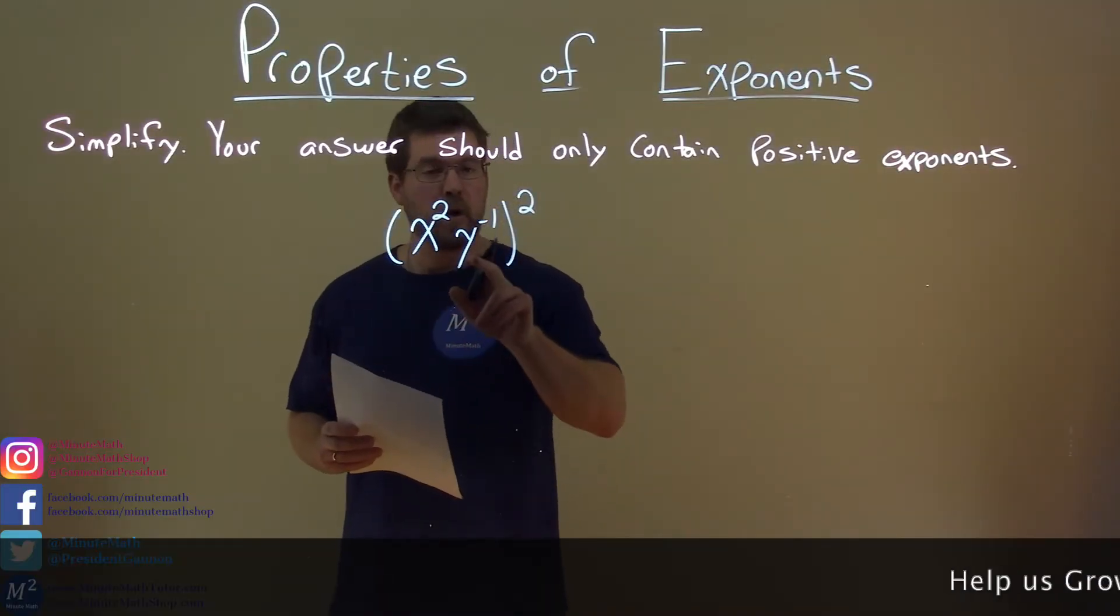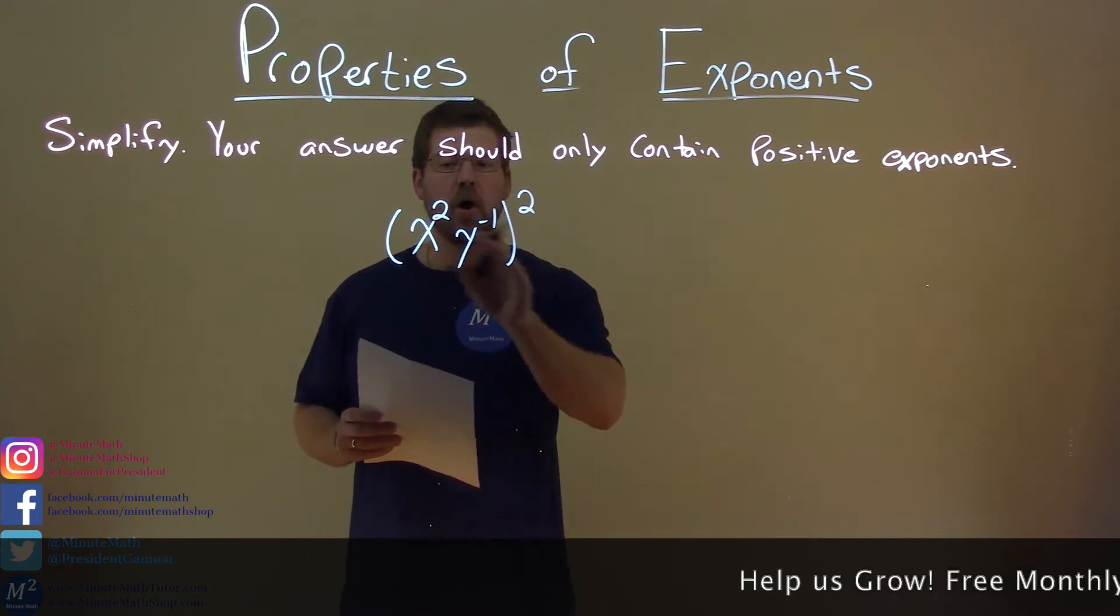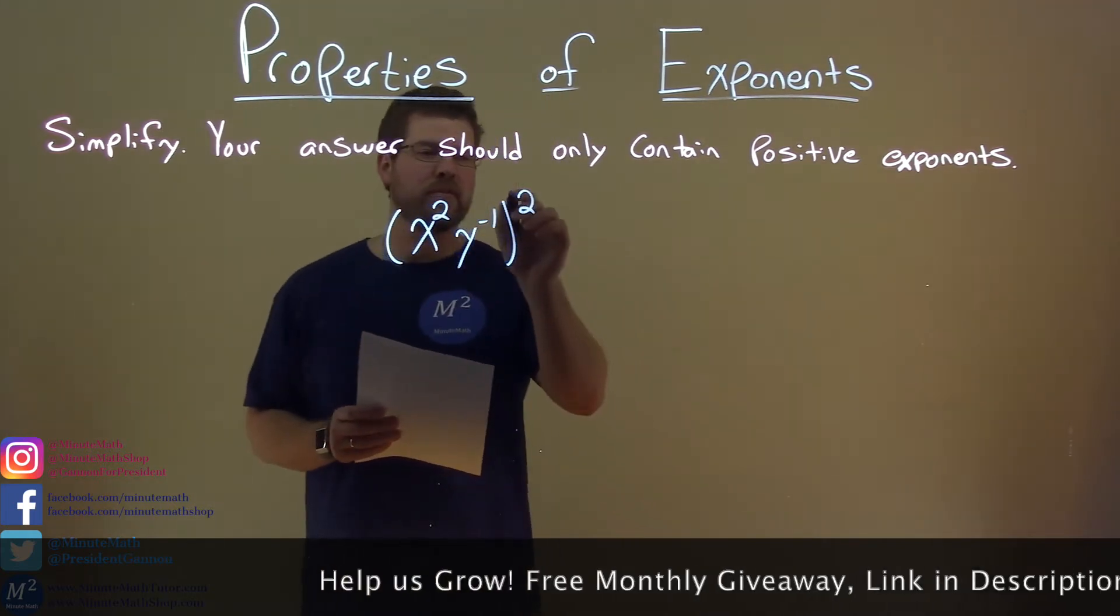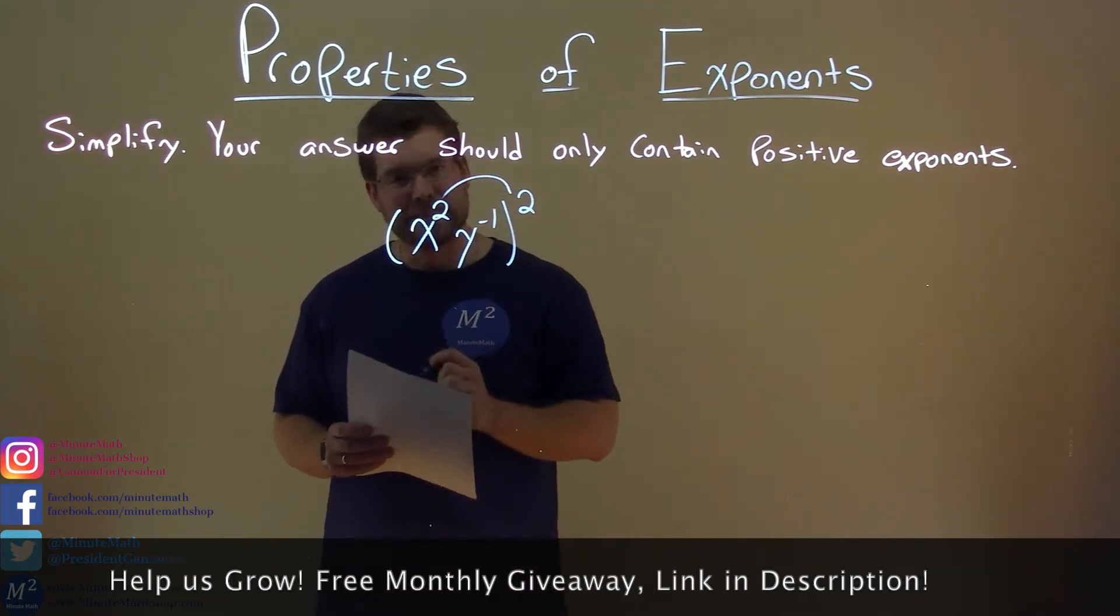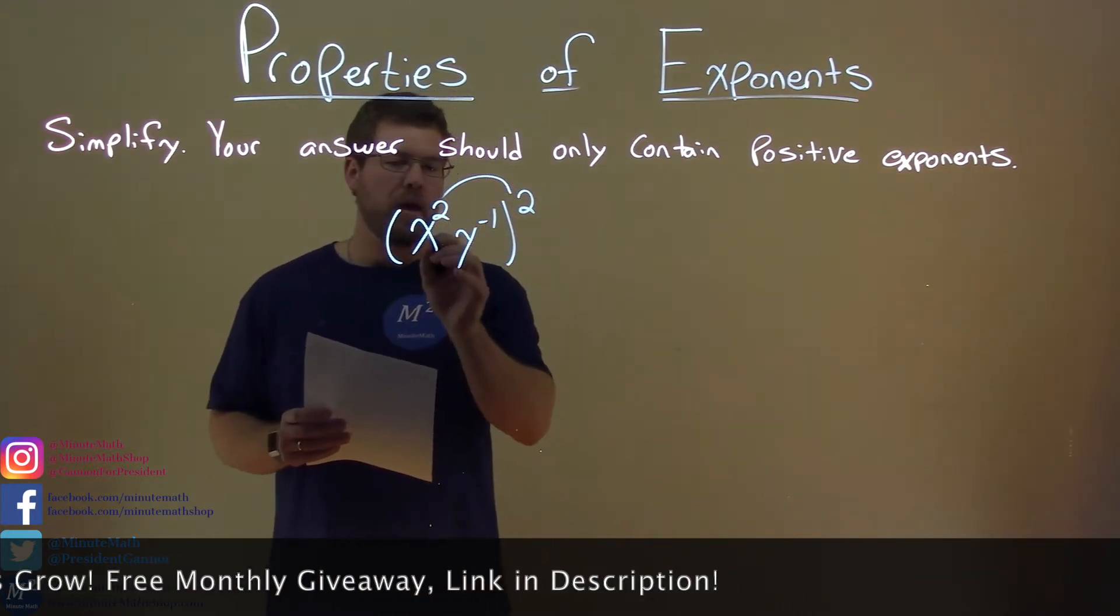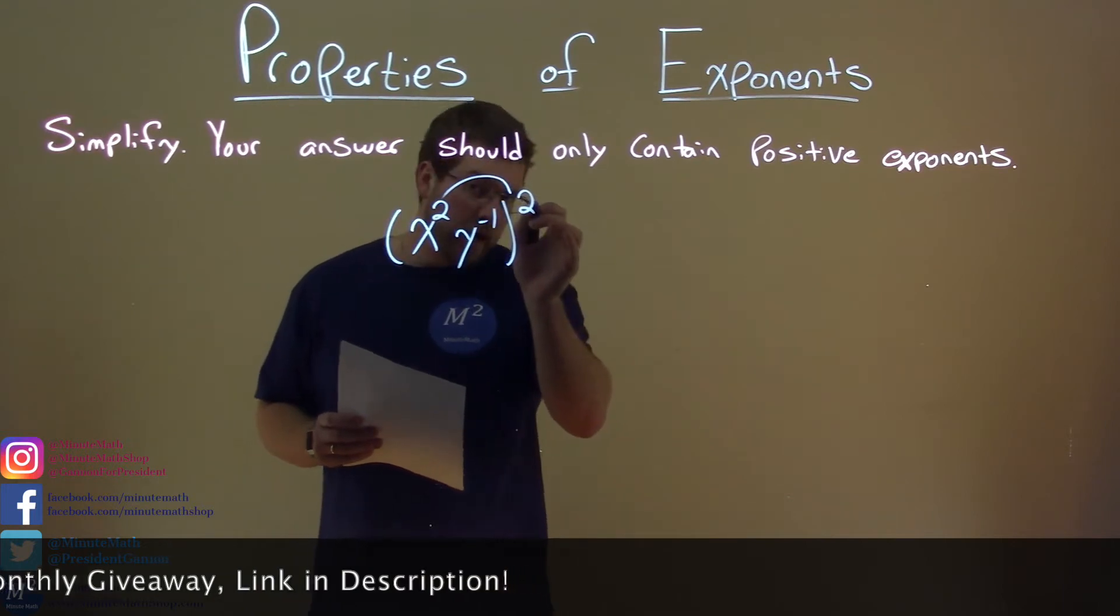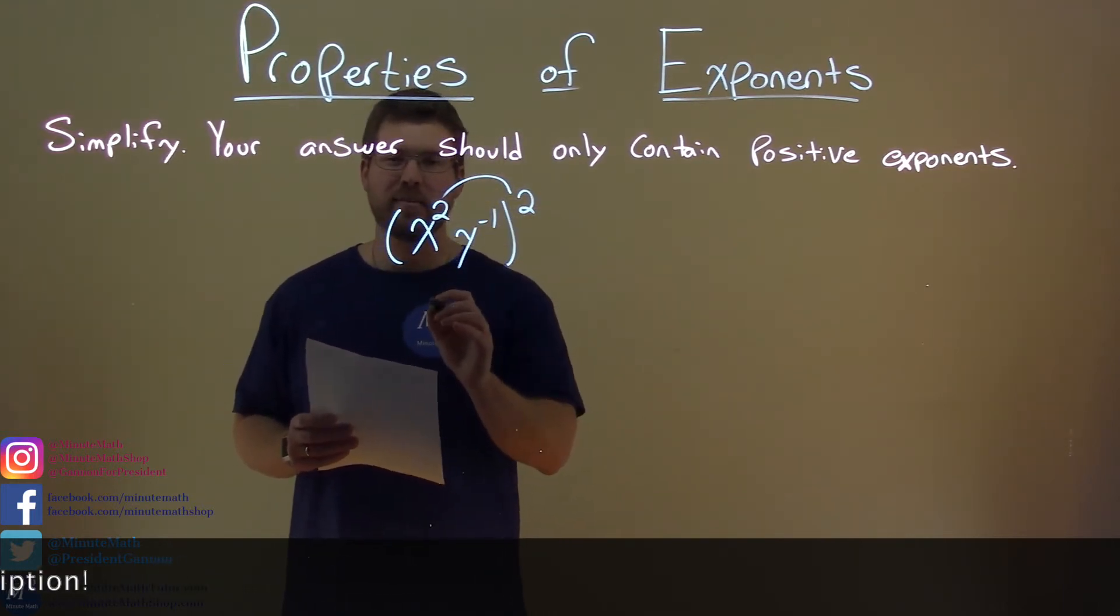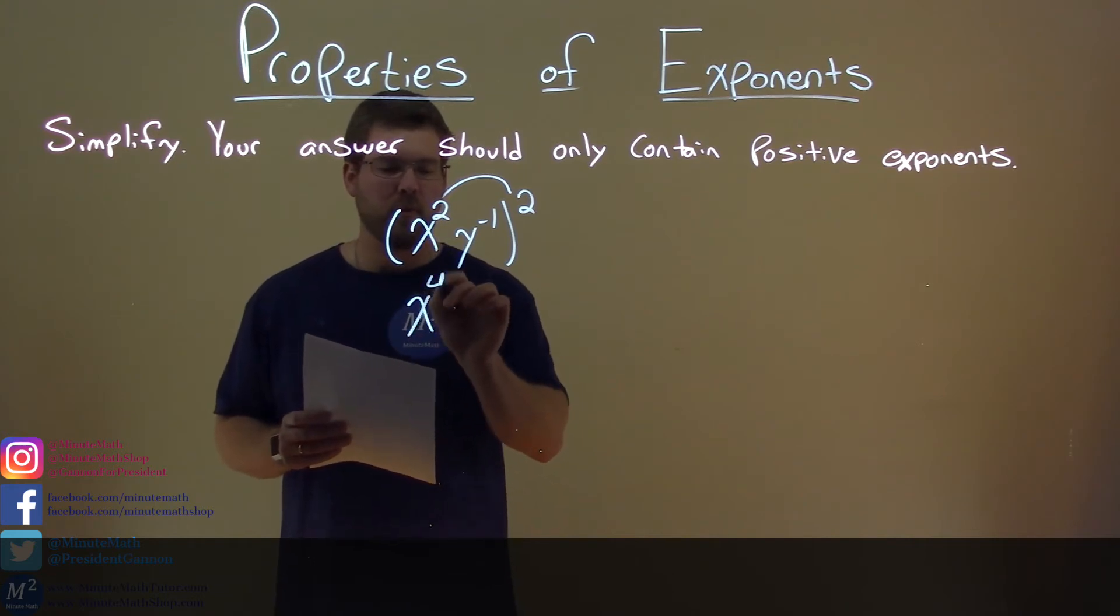x squared times y to the negative 1 power all to the second power. We want to distribute the squared to both parts inside the parentheses. So, x squared squared, we multiply the exponents, and 2 times 2 is 4, so we have x to the fourth power here.